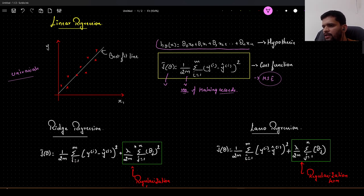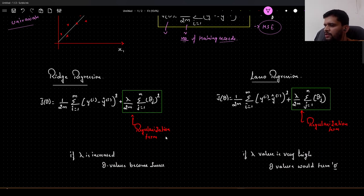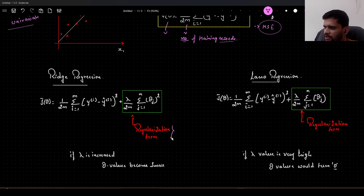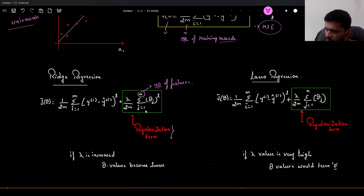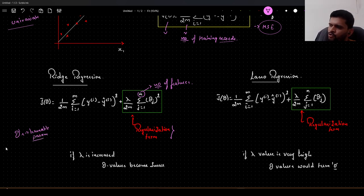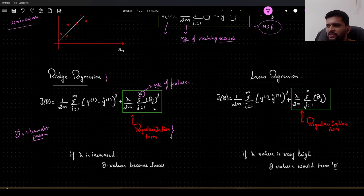While dealing with regularization, we have learnt about ridge and lasso regression. In ridge regression, the cost function changes slightly — we add a new regularization term, which is given by lambda by 2m, summation from j equals 1 to n of the squared values of the parameters, the learnable parameters. In gradient descent, we update these values to get the minimum cost function. This is how we use regularization in ridge regression; we take the squared norm, which is also called the L2 norm.